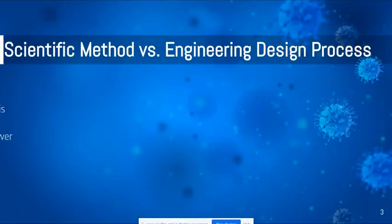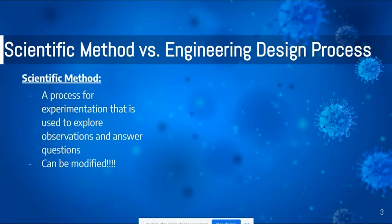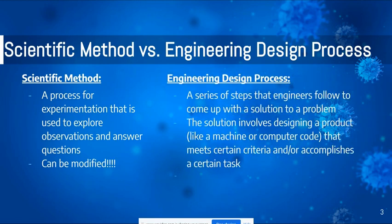Let's first take a look at the scientific method. The scientific method is a process for experimentation that is used to explore observations and answer questions. It can be modified — but so can the engineering design process.